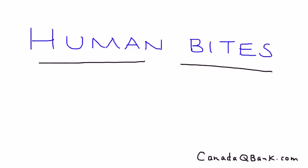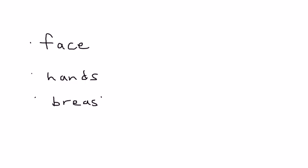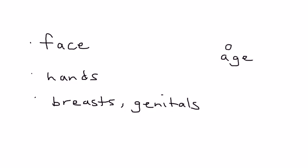Human bites are common and they tend to occur in any setting or any type of age. They can commonly occur on the face or hands, but any part of the body — some other parts that commonly present with bites are breasts and genitals. They can occur in kids that are playing or sometimes in bar fights.